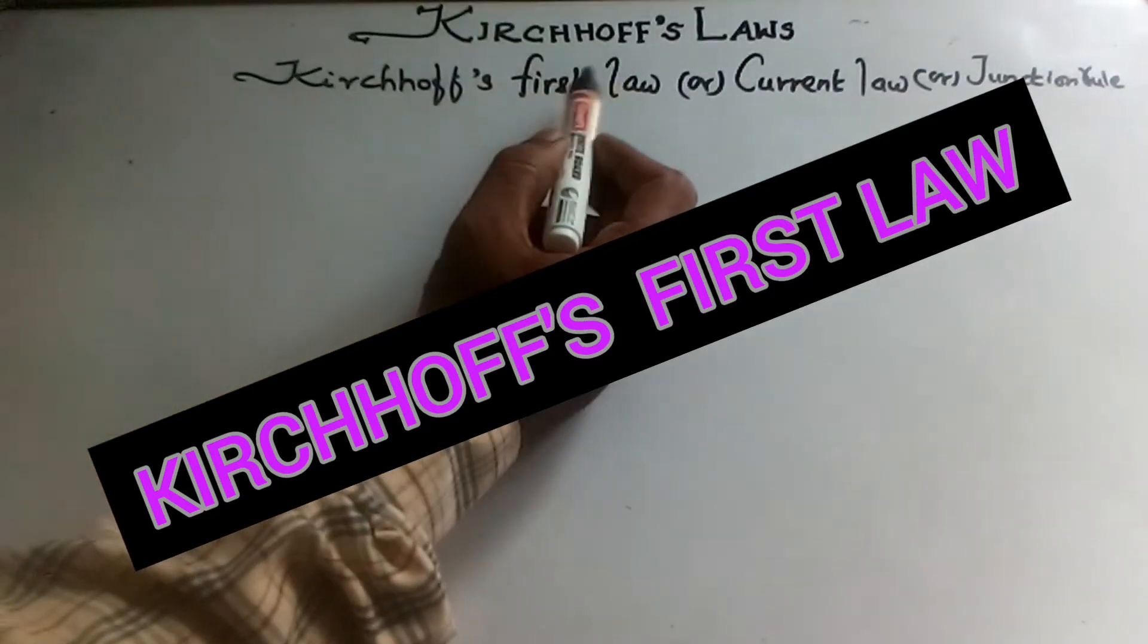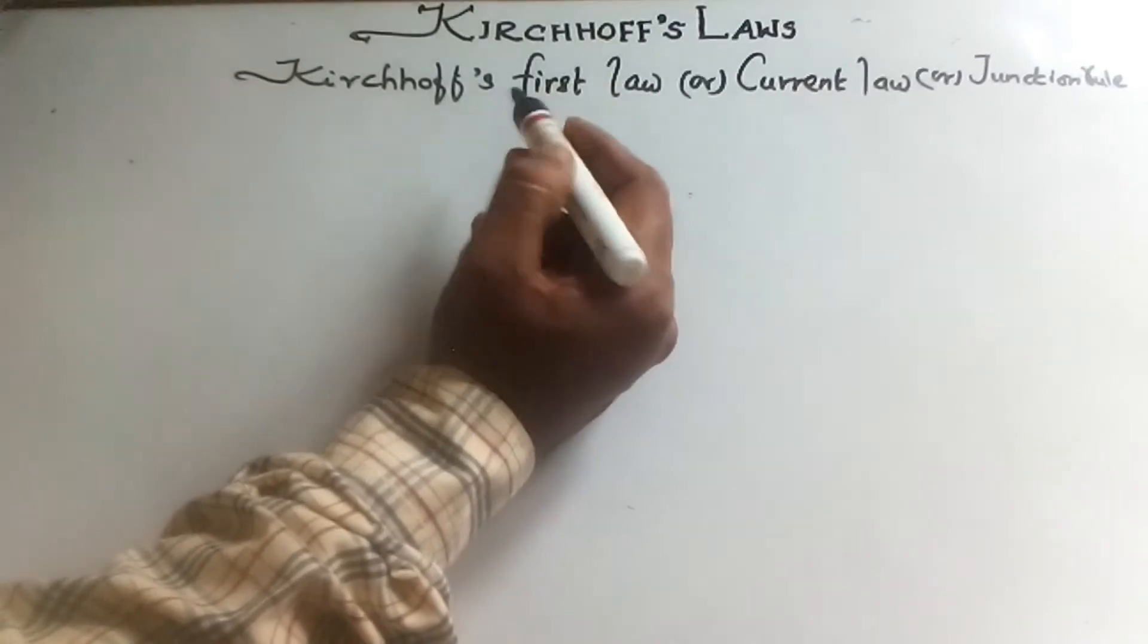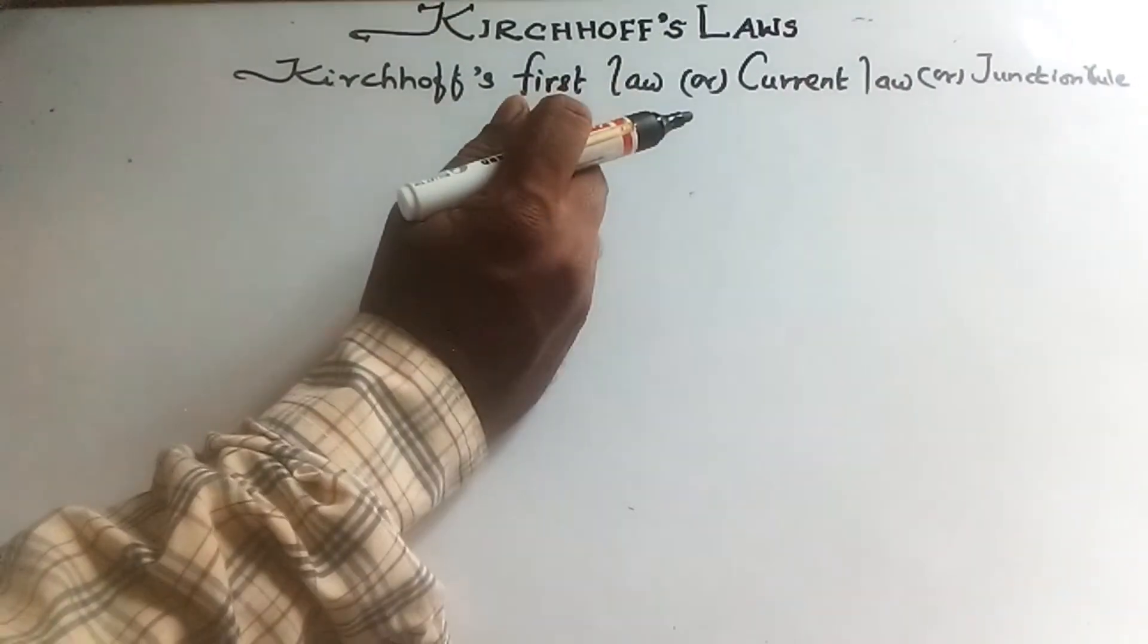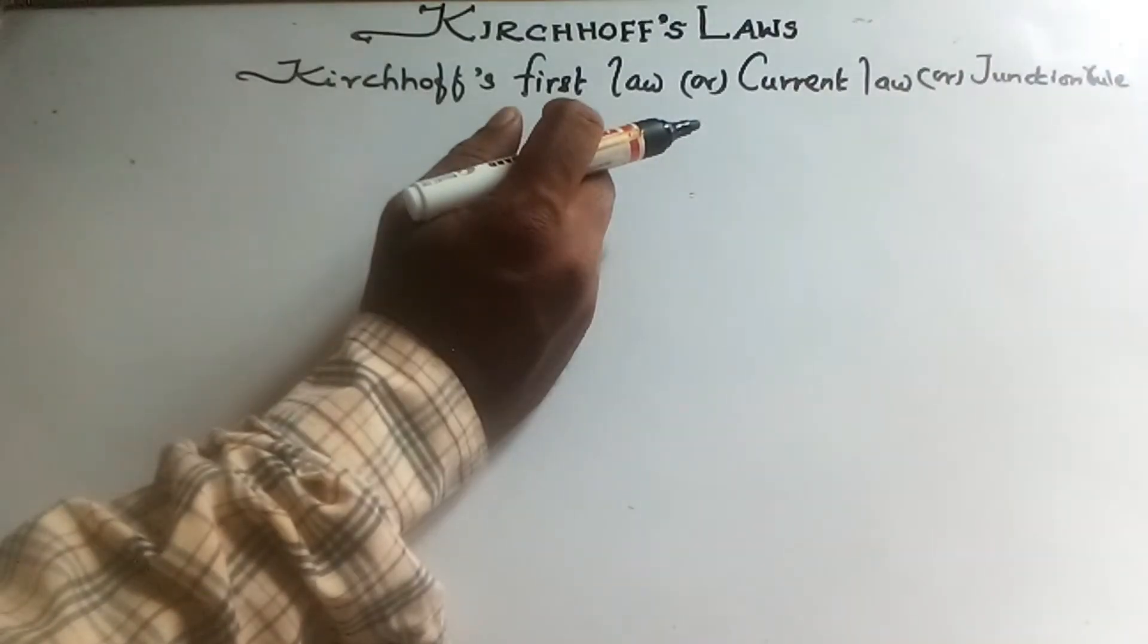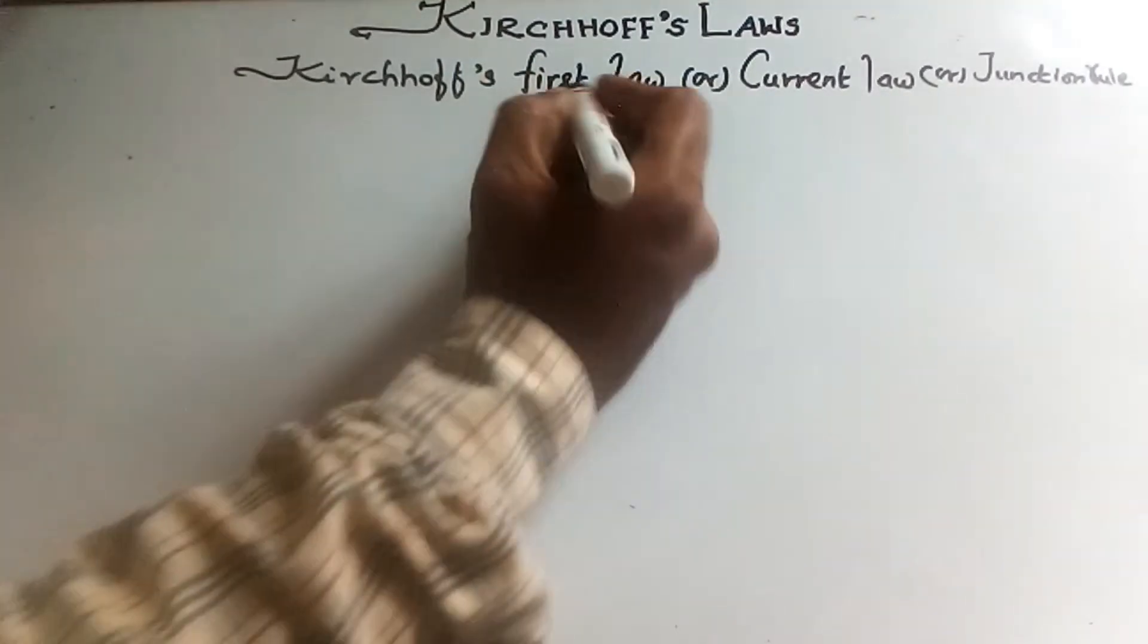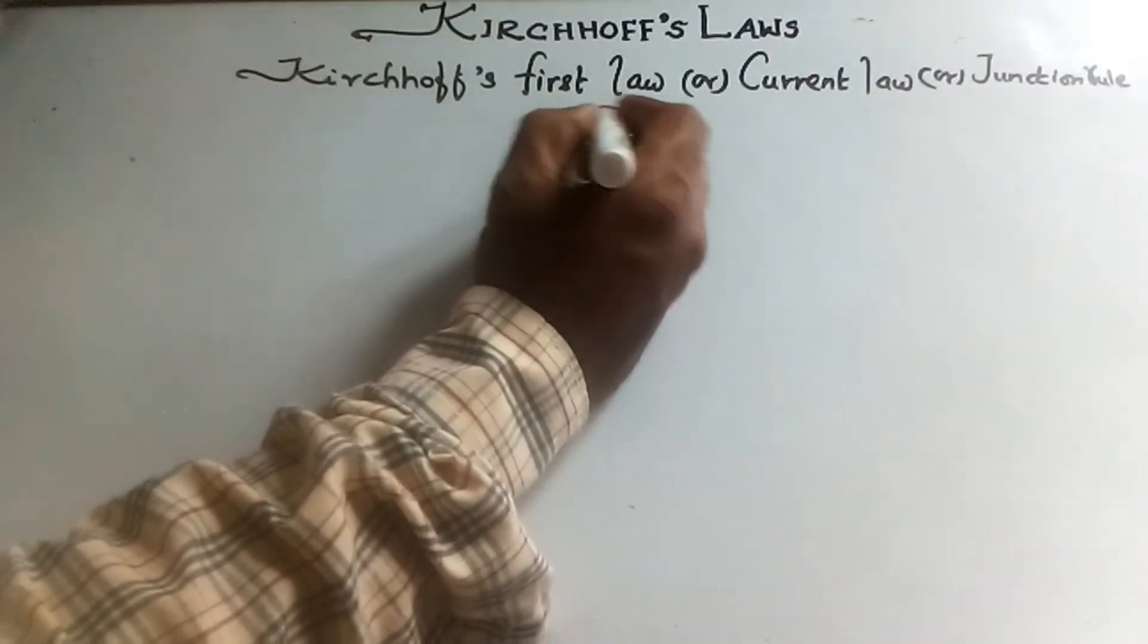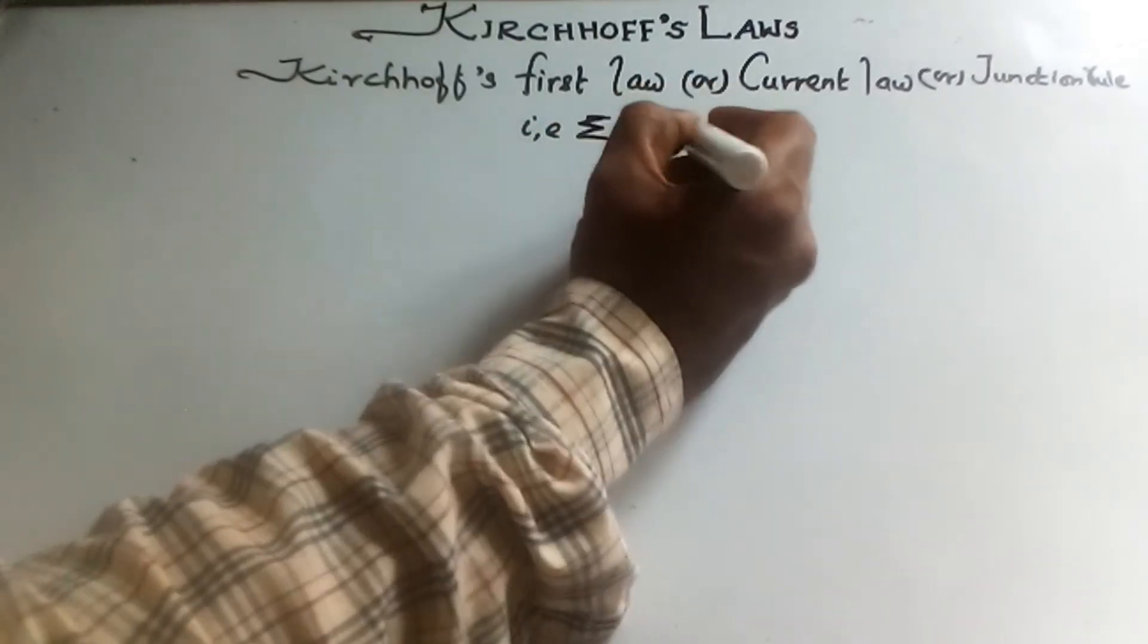Kirchhoff's Laws. Kirchhoff's First Law or Current Law or Junction Rule. In any electrical network, the algebraic sum of currents meeting at a junction is always zero. That is, summation of I equal to zero.